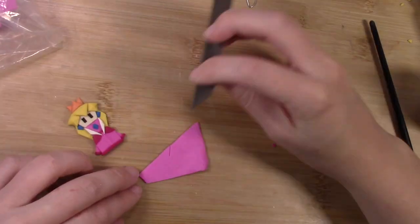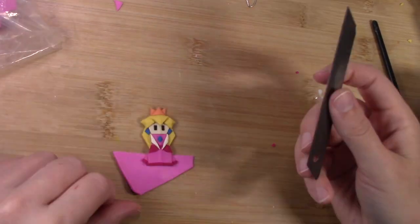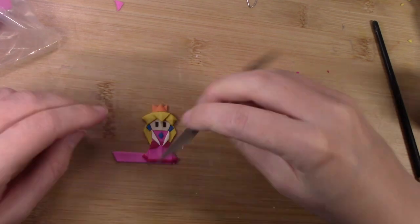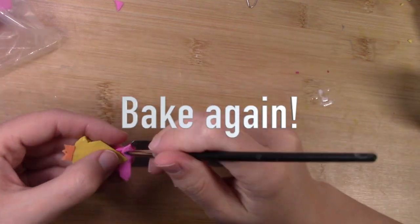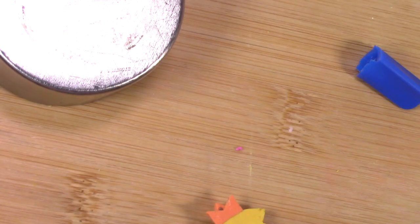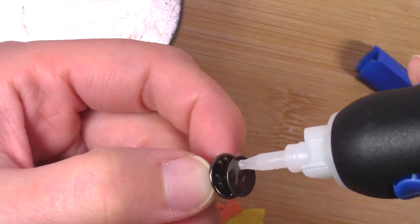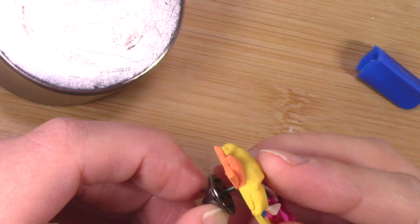And we'll bake again. And one last step to make sure she's extra secure and flat on the back, I just added some extra pink clay to fill in the extra gaps that were back there, and a final bake, and glue on a pin back so she can go on to whatever you want.